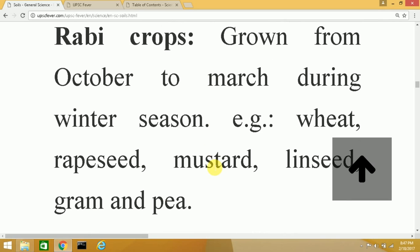There is also a third season called Zaid, which comes between the Kharif and Rabi seasons, and mostly fruits are grown in this period.